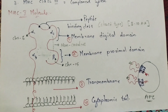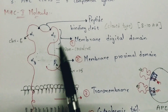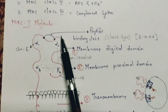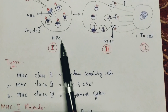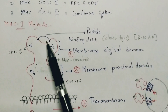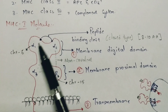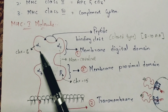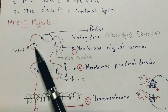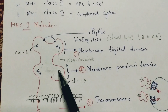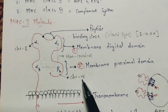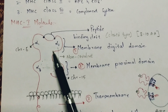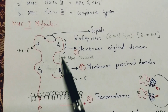Coming to the structure of MHC class 1 molecule — Major Histocompatibility Complex class 1 — it is present in nucleus-containing cells, that is, antigen presenting cells. It consists of two chains: an alpha chain and a beta chain — specifically Alpha 1, Alpha 2, Alpha 3, and Beta 2. The alpha chain is coded by chromosome number 6, and the beta 2 chain is coded by chromosome number 15. The bond between alpha and beta chains is a non-covalent bond.